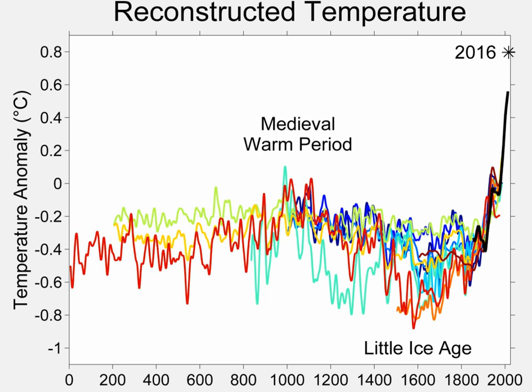Proxy records must be averaged in some fashion if a global or hemispheric record is desired. The composite plus scaling method is widely used for large-scale multiproxy reconstructions of hemispheric or global average temperatures.